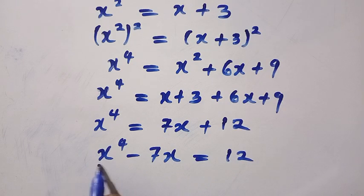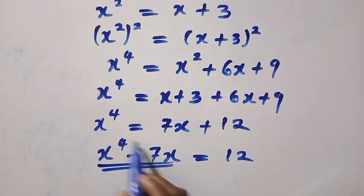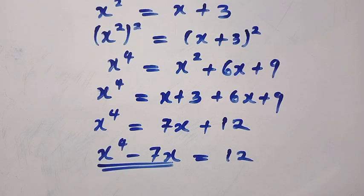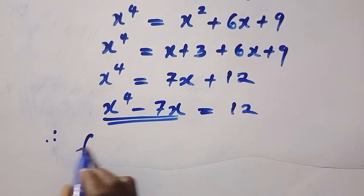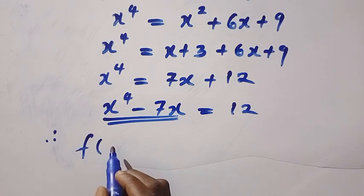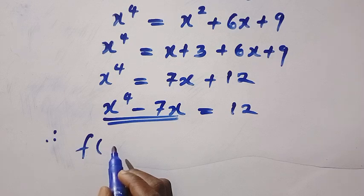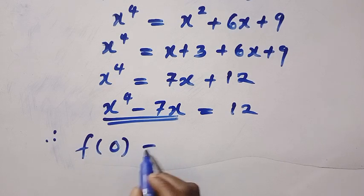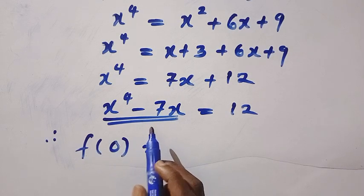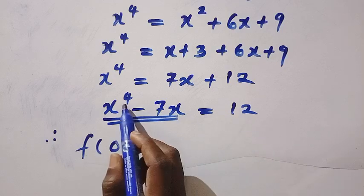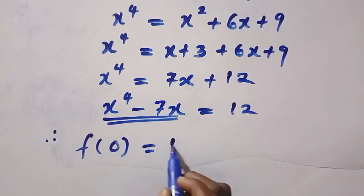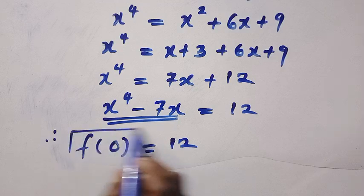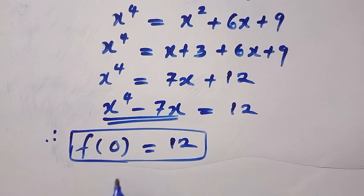This is very interesting. We have x to the power of 4 minus 7x, which equals 12. Therefore, we are going to have f of — instead of x squared minus x minus 3, we change this to f of 0, because that is what we used to get x to the power of 4 minus 7x equals 12. So f of 0 equals 12. This is how simple the first method is.